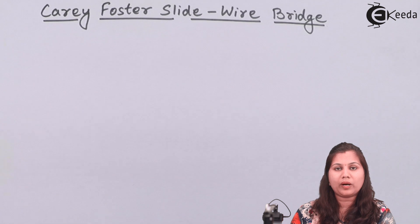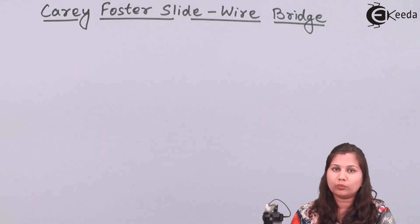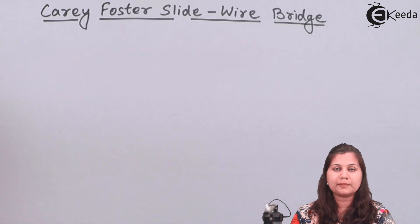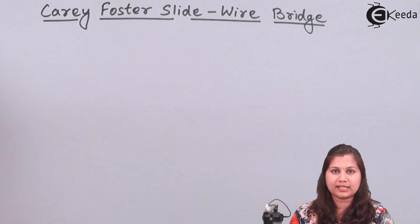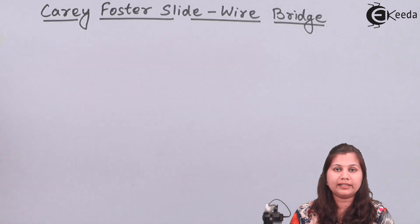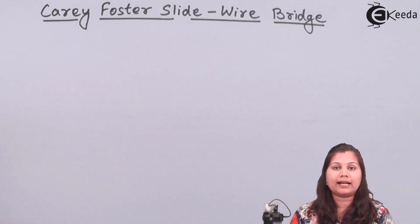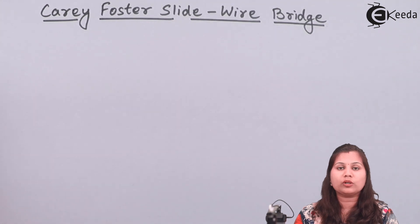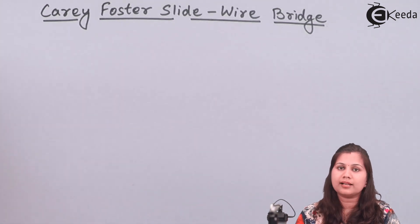The Carey Foster slide wire bridge is used for the measurement of resistances which are nearly equal in their values. This bridge is just like the Wheatstone bridge, in which we have four arms with four resistances. The bridge is said to be balanced when the galvanometer shows null deflection, and when balanced, the ratio of the resistance arms P by Q equals R by S. So this Carey Foster slide wire bridge is also a modification of the Wheatstone bridge and works on the same principle of null deflection.